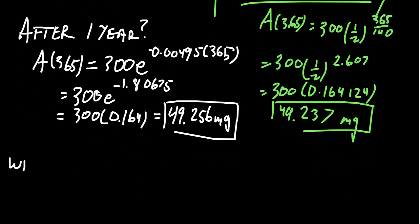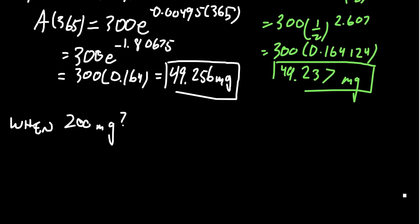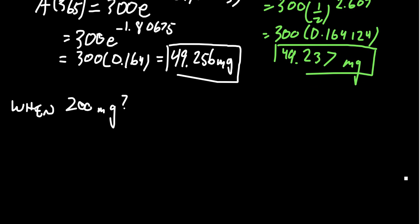We could also ask the following: when will it be 200 milligrams? How do we work through that one? If we tried the first model, when will it equal 200 milligrams? We would set 200 equal to 300e to the negative 0.00495t.